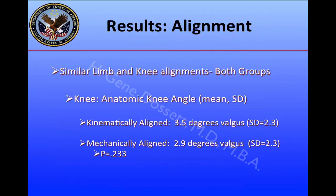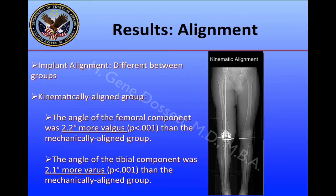Knee alignment was similarly very close between the two groups with no statistical difference. What was different was the implant alignment: the kinematically-aligned group showed 2.2 degrees more valgus of the femoral component, and the mean tibial component was 2.1 degrees more varus. The radiograph shows a straight line from the center of the femoral head to the center of the ankle, with the tibia at 2 degrees of varus and the femur at 2 degrees of valgus — in this particular patient, this very closely matches the non-operative left leg.